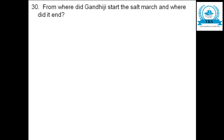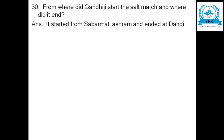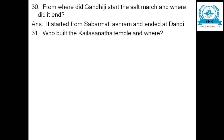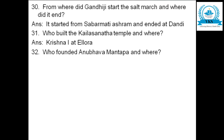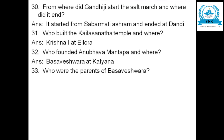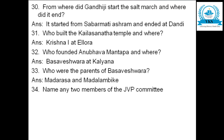From where did Gandhiji start the Salt March and where did it end? Gandhiji started the Salt March from Sabarmati Ashram and it ended at Dandi. Who built the Kailasanatha temple and where? Krishna I at Ellora. Who founded Anubhava Mantapa and where? Basaveshwara at Kalyana. Who were the parents of Basaveshwara? Madarasa and Madlambike.